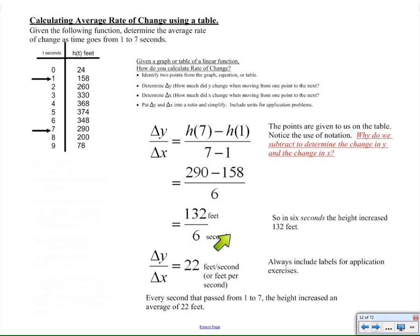All right, so make sure that we include our labels in our response, and of course, a quick statement of understanding. So what this number, 22 feet per second, is telling me is that every second that passed from one second to seven seconds, the height increased an average of 22 feet. So when you make your statement of understanding, try to avoid saying 22 feet per second. Tell me what 22 feet per second actually means.